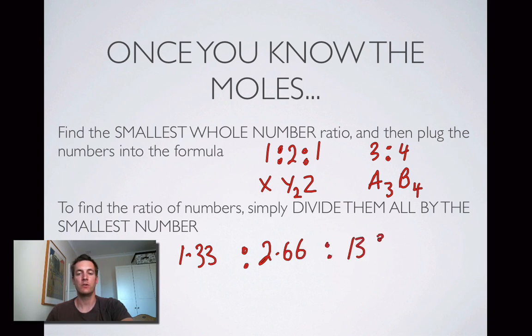Then what I do to find the whole number ratio is I divide all these numbers by the smallest of those numbers. So if I divide all these numbers by 1.33, I should find the smallest whole number ratio here.